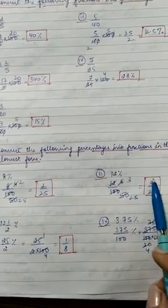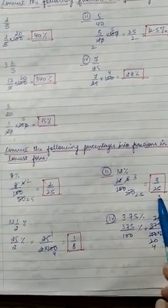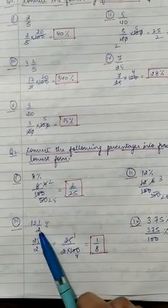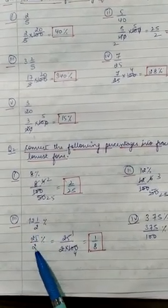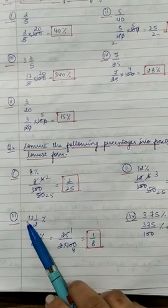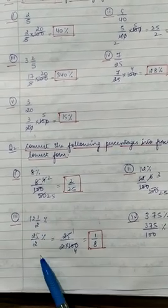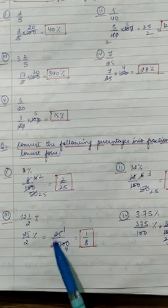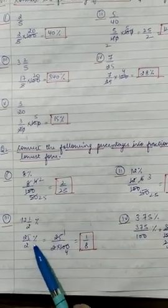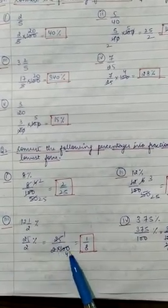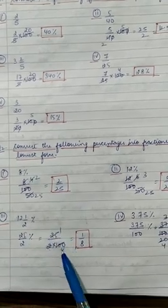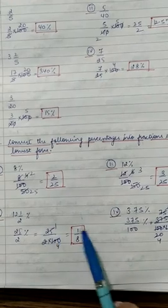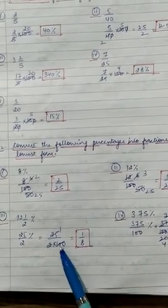Next is 12 and 1/2 percent. Convert this mixed fraction into improper fraction: two into twelve is twenty-four, plus one is 25/2 percent. So 25/2 into 1/100 — upon hundred to remove the percentage sign. Twenty-five ones are twenty-five, twenty-five fours are hundred, so we get the answer 1/2.